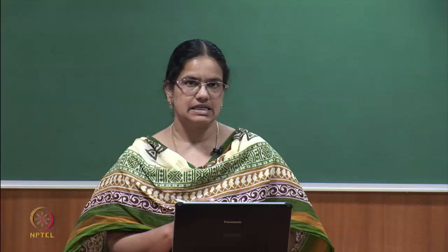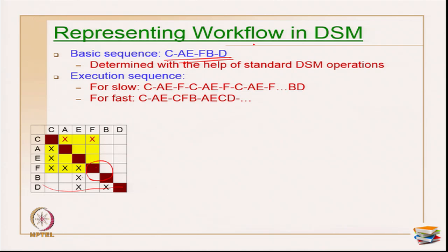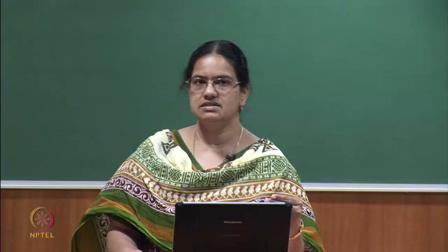Now let us see how to represent workflow in a DSM. Representing workflow in DSM - suppose if I want to use the DSM example in a construction phase. Researchers have identified two ways of executing a sequence: one is called the basic sequence and the other is called the execution sequence. The basic sequence - C first, then A and E in parallel, then F, then B activity in parallel with D, then D is executed - is what you get from finishing the tearing process.